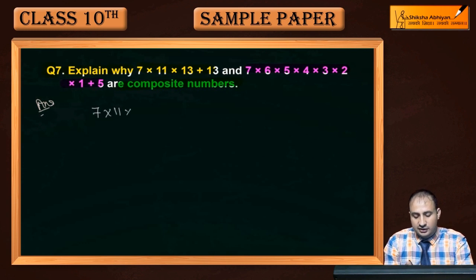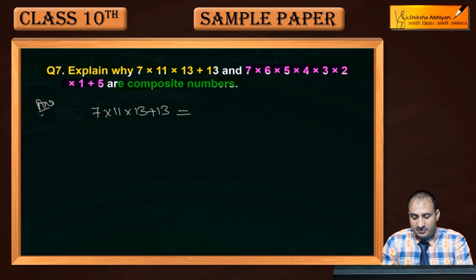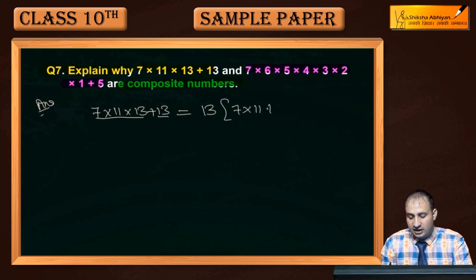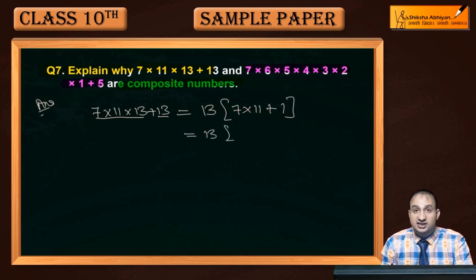अगर इस number में 13 common लें — देखिए, एक इस term में और एक इस term में — दोनों terms में से 13 common आ रहा है। यहां कितना मिलेगा: 13×(7×11 + 1) यह आपको मिलेगा।